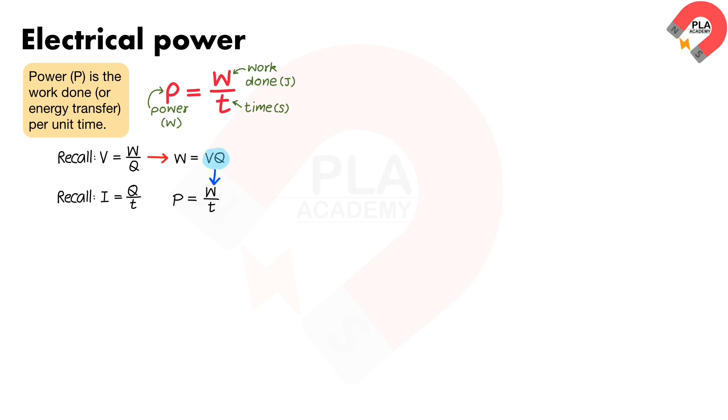Substitute W equals VQ and Q over T equals I. So we can write the formula for the power as P equals VI.